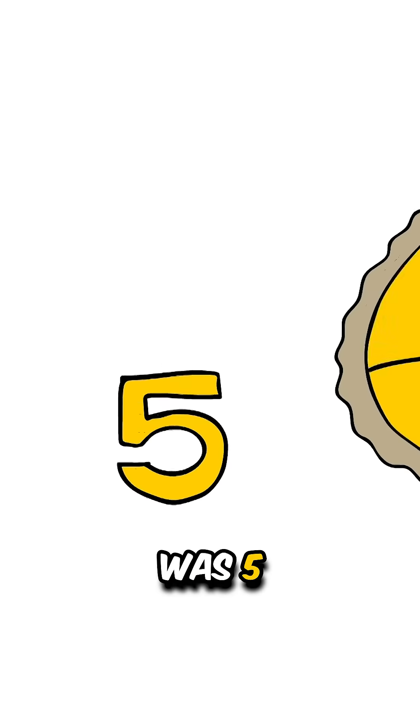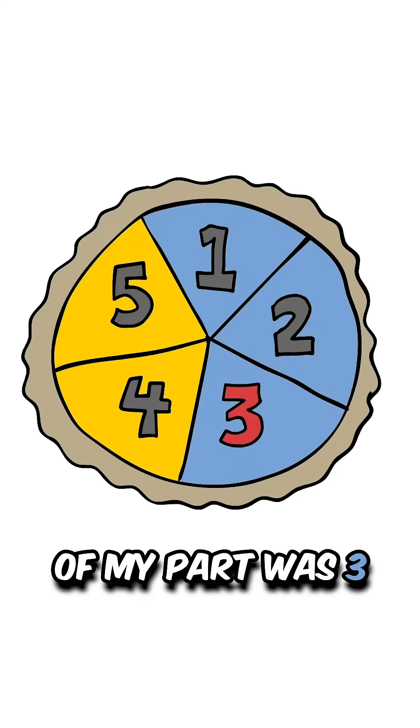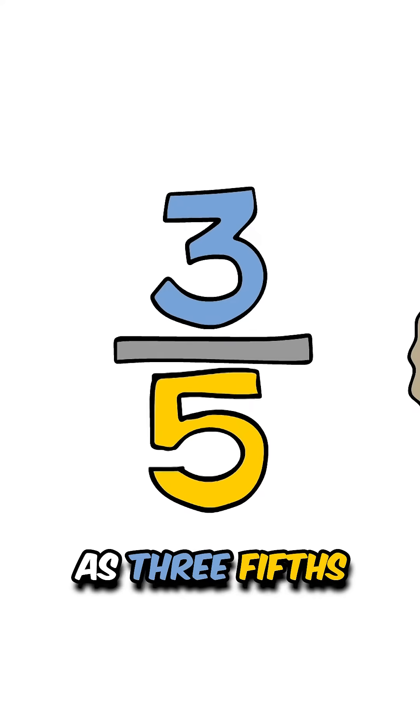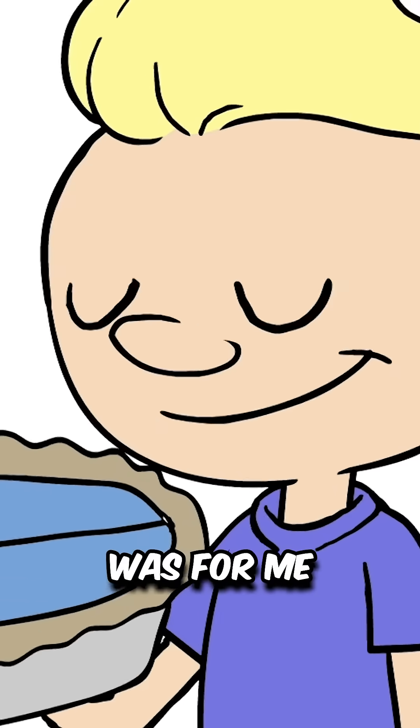The denominator of the whole pie was five. The numerator of my part was three, as three-fifths of the pie was for me.